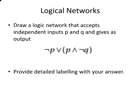So we have the negation of P and we have OR, that symbol there, the V symbol, that's OR, and we have P wedge negation of Q, so that's P and Q.